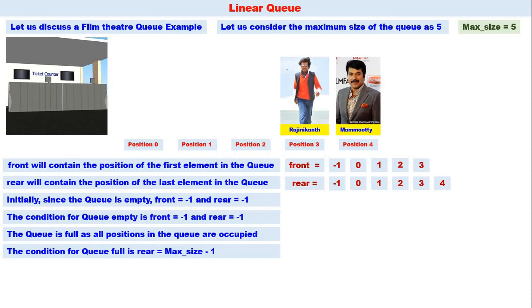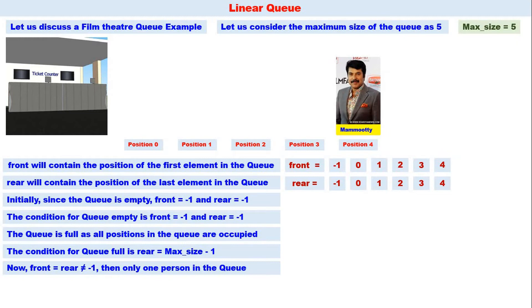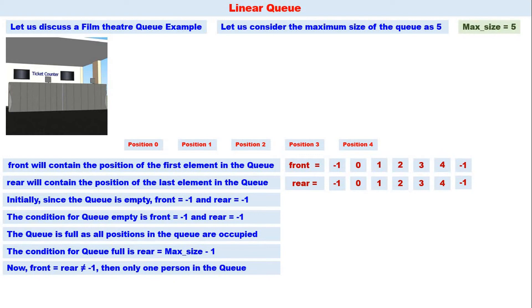The ticket clerk gives a ticket to Rajnikan sir, who also goes inside. Front becomes four. Now Mohanlal sir is both the first and last person — there is only one person in the queue. When front equals rear and both are not equal to minus one, there is only one element in the queue. After Mohanlal sir goes inside, front and rear both become minus one, and the queue becomes empty.